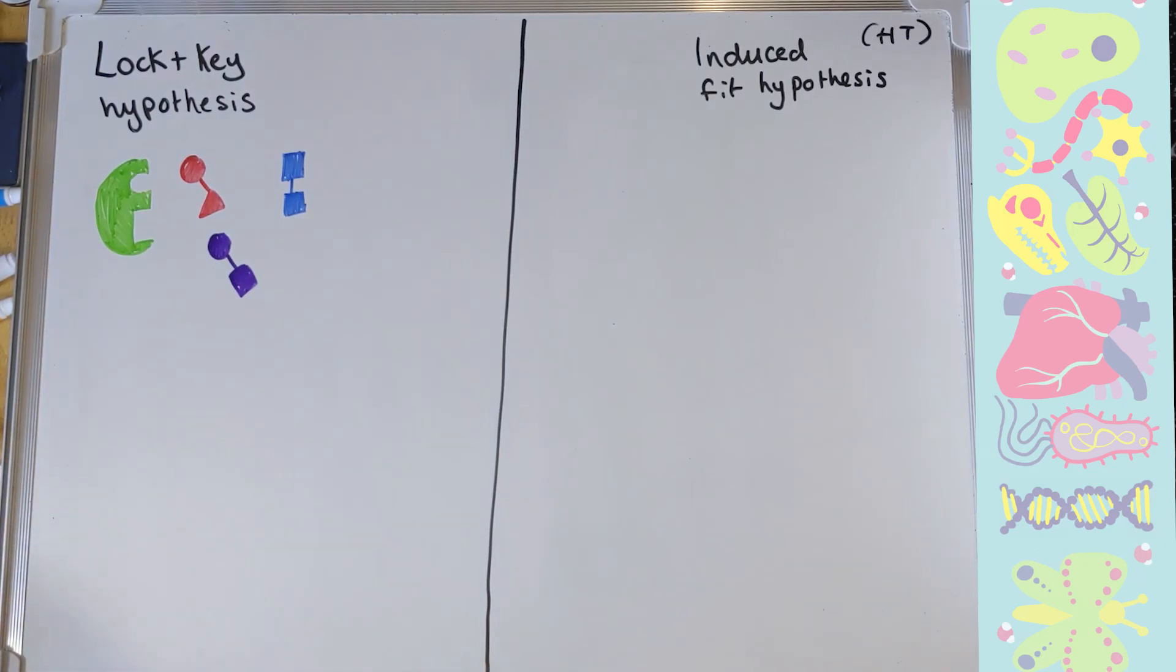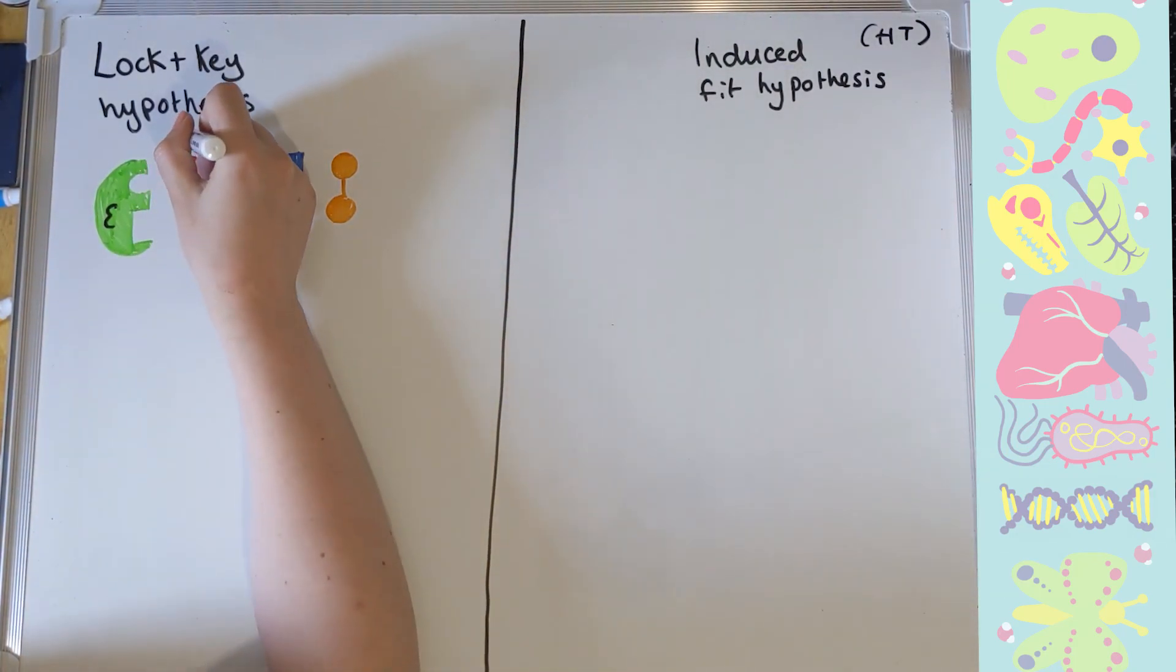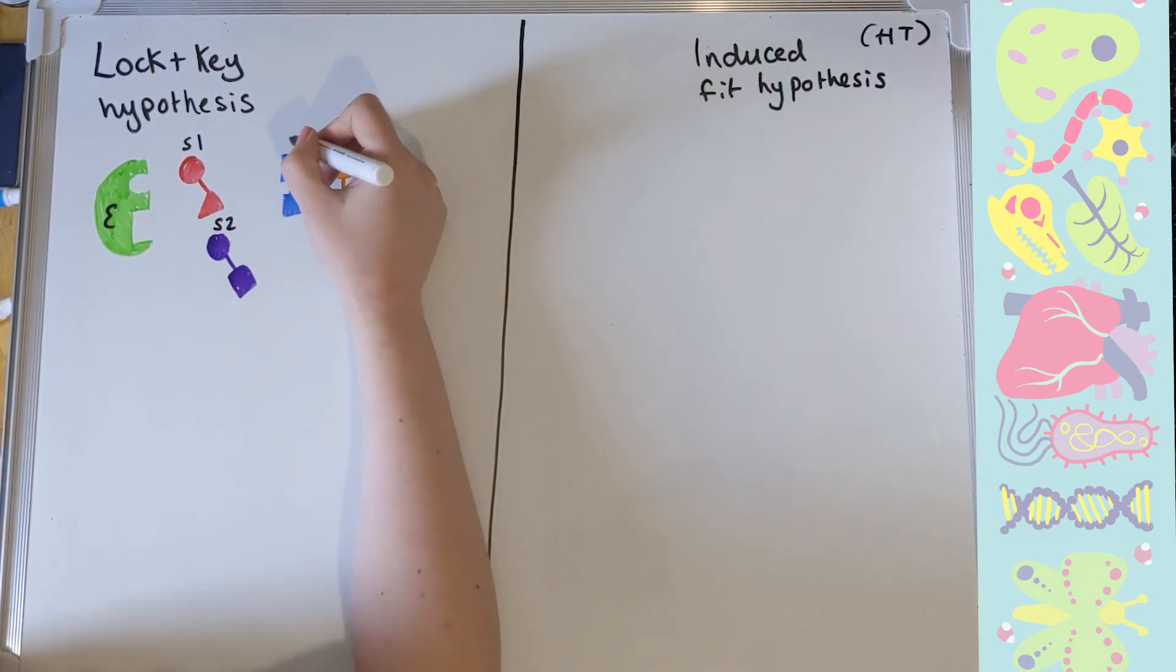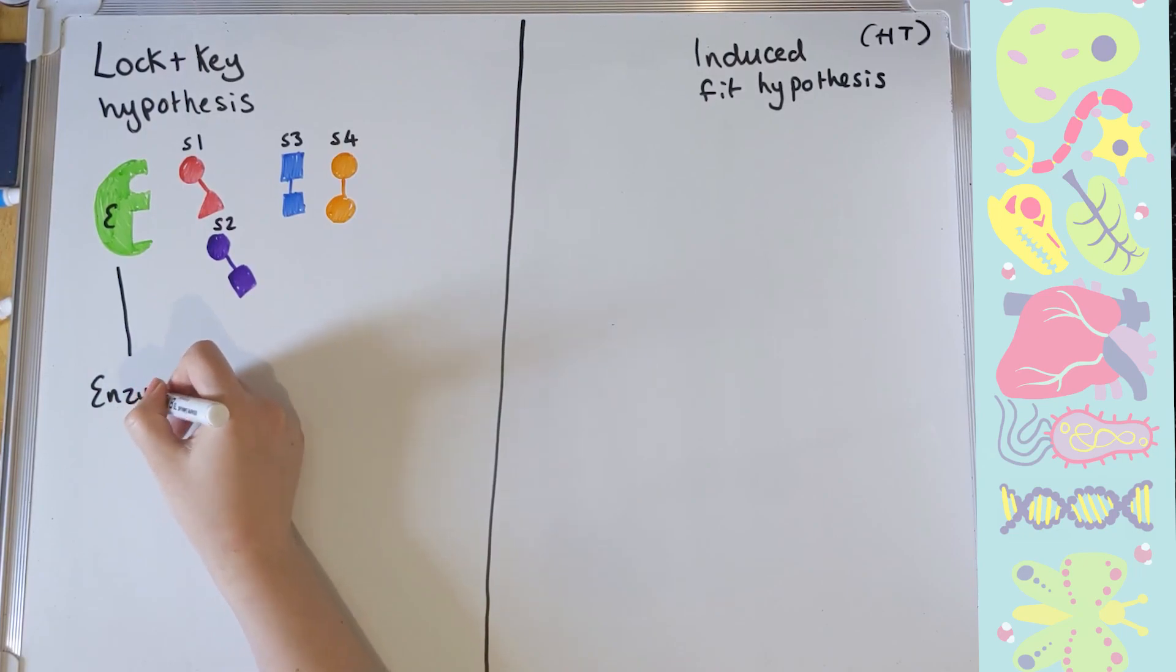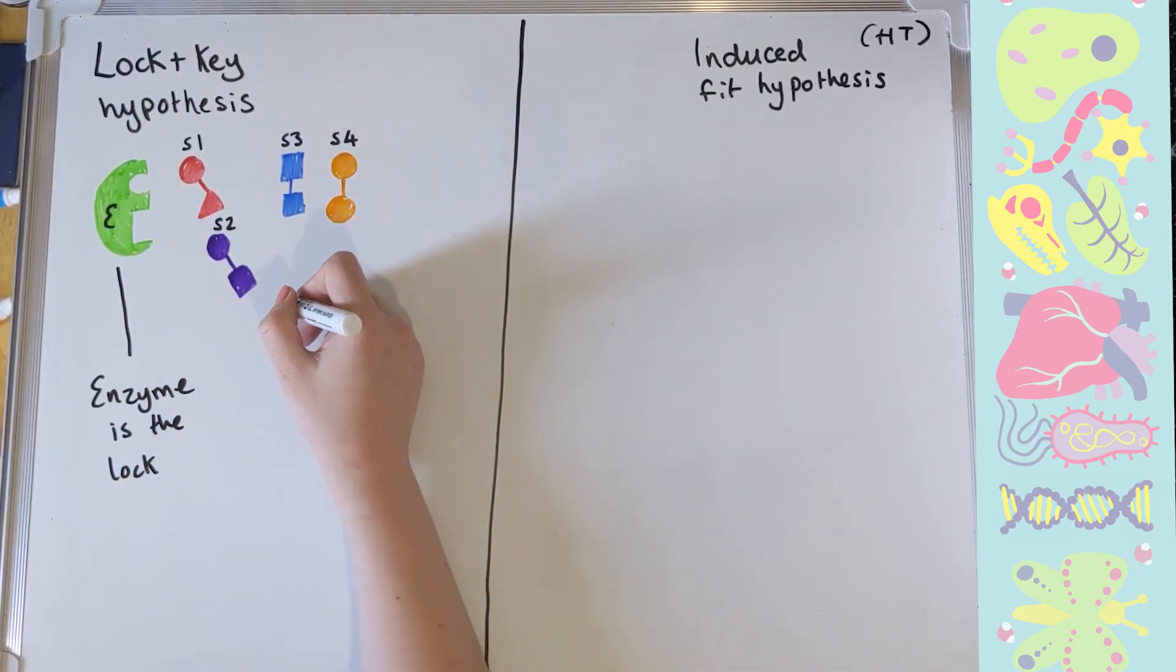Hopefully you got the answer right. The other ones didn't fit because their shape is wrong. If you look at the enzyme, the active site, the bit that goes in, has a circle and a square shape. So only substrate two, that has the circle and the square shape, is going to fit. Substance four might fit in there, but because it's a circle on top and a circle on bottom, it's still not going to work correctly.